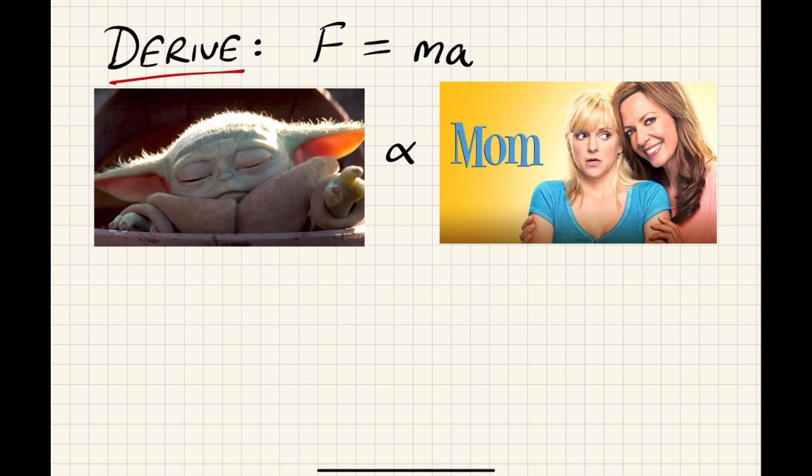So to help with this derivation, we need to ask ourselves the question: what do baby Yoda and your mom have in common? And that is that they can both make you cry. And also, taking baby Yoda, he's got this weird hand symbol that he does, that's going to be the proportional symbol there.